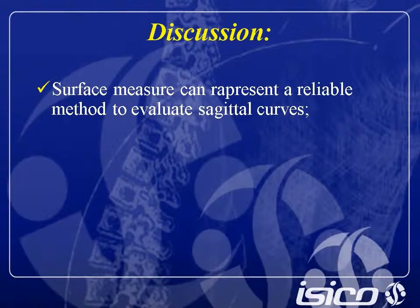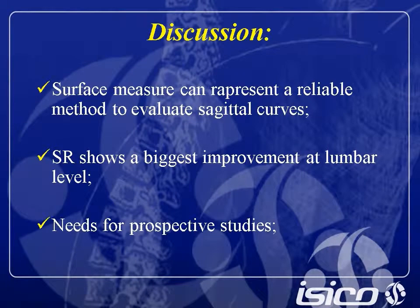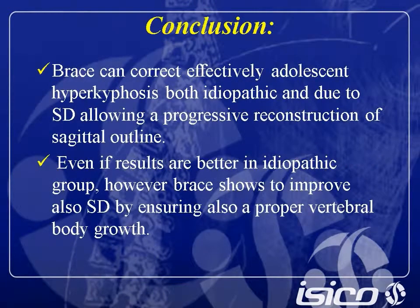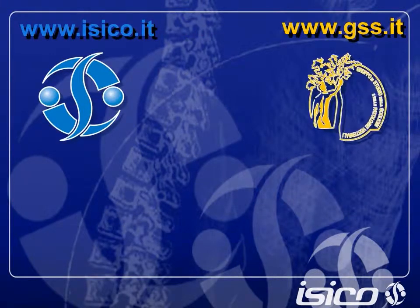This was the first controlled study about TLSO for hyperkyphosis correction. We observed that surface measurement can represent a reliable method to evaluate sagittal curves. However, this was a retrospective study with a small sample population. Our results led us to conclude that bracing can effectively correct adolescent hyperkyphosis — both idiopathic and due to Scheuermann's disease — allowing a progressive reconstruction of the sagittal profile. Even if results are better in the idiopathic group, the brace also improved Scheuermann's disease by ensuring proper vertebral body growth.